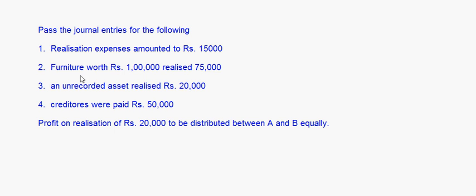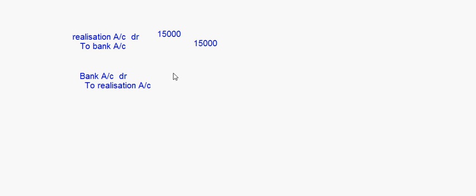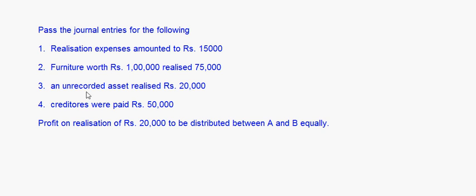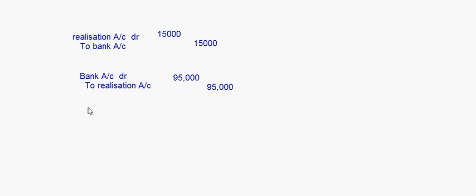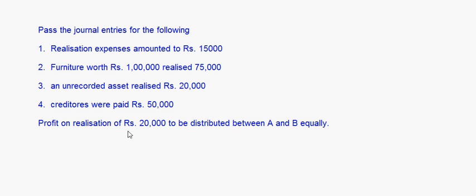For the furniture realized at 75,000 and the unrecorded asset realized at 20,000, both are assets so we can combine them: Bank Account debit to Realization Account for rupees 95,000. Then for creditors paid rupees 50,000 — settlement of liability — the entry is: Realization Account debit to Bank Account, rupees 50,000.